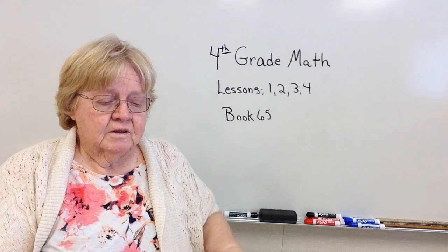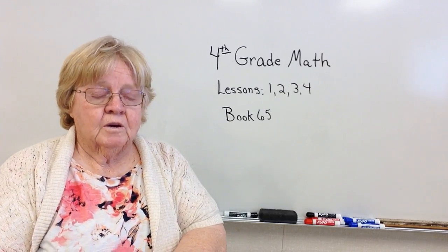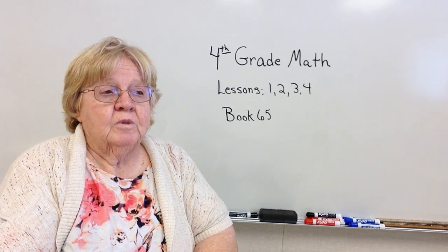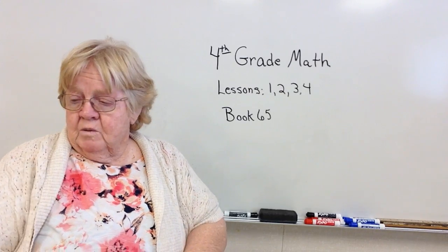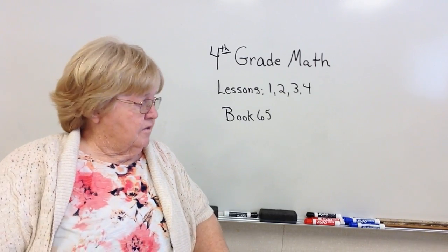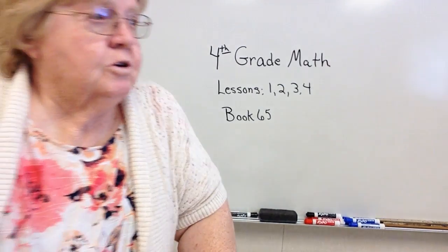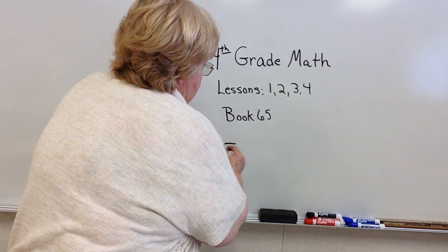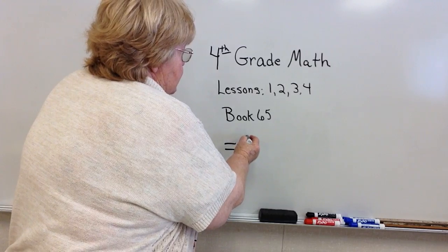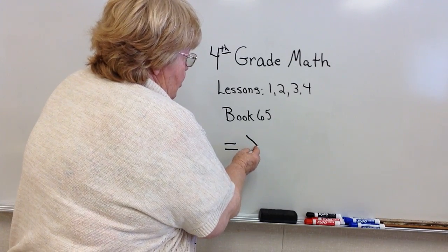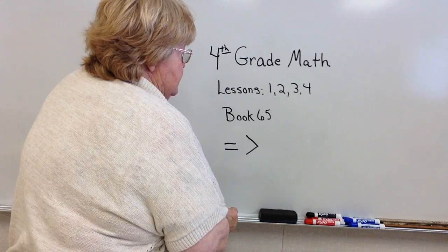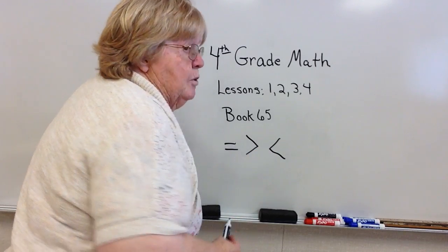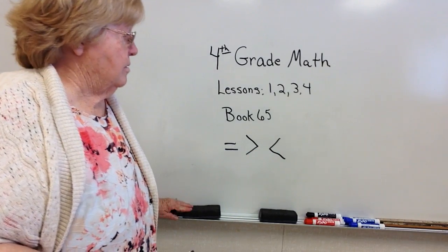Lesson number four: comparing whole numbers. You've done this before. To compare the numbers, you write one number, and then if it's equal to the next number, you would draw an equal sign. If it's greater than, you would make this sign. Remember, the arrow always points to the smallest number. If it's less than, you would point this way. The arrow always points to the smallest number.